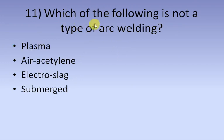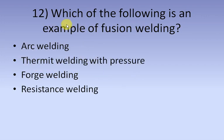Which of the following is not a type of arc welding? Air acetylene is not a type of arc welding. Which of the following is an example of fusion welding? Fusion welding is arc welding.